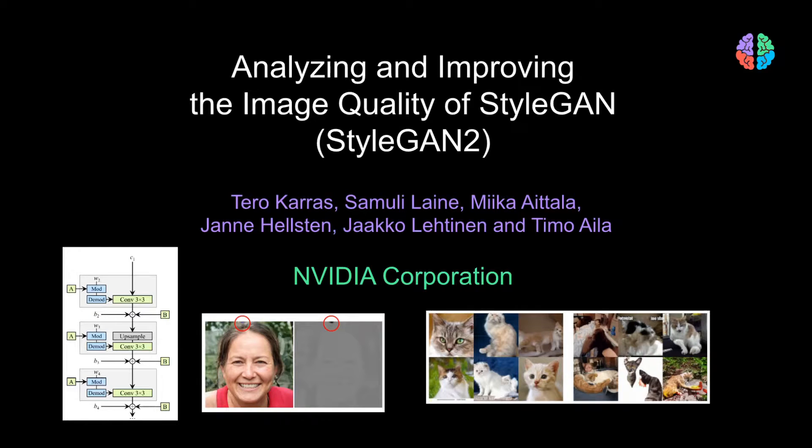StyleGAN2 addresses these problems by revisiting adaptive instance normalization and introducing what they call demodulation. They additionally introduced path length regularization and modified network architectures for both the generator and discriminator, which results in high resolution images without any artifacts.